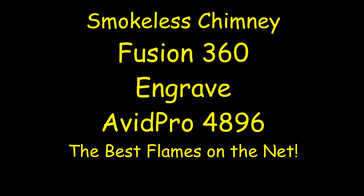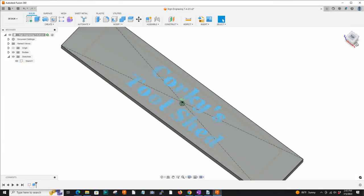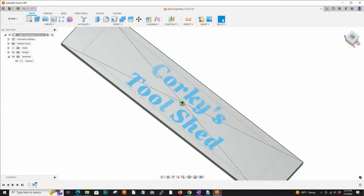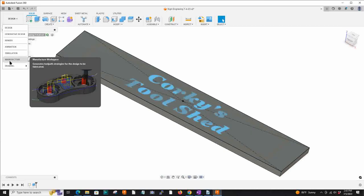Smokeless Chimney Fusion 360 engrave using an Avid Pro 4896. I got my model set up. This is an educational thing because some people don't know how to do this. It's a really cool tool in Fusion 360.